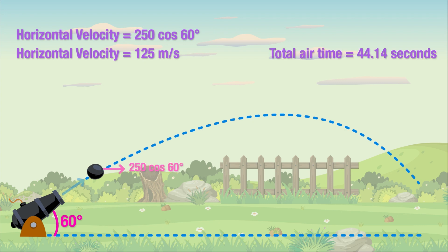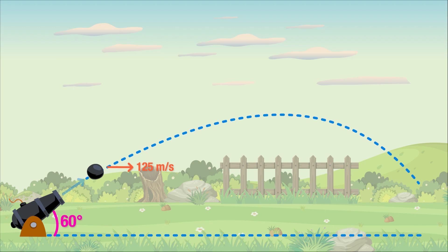We know that the horizontal velocity is the horizontal component that we need to resolve from the original velocity, and we'll do that using the cosine function, because the horizontal component is adjacent to the angle of action. 250 cos 60 comes out to be 125 meters per second. So there we have it. The initial horizontal velocity of the projectile is 125 meters per second.